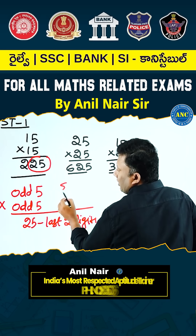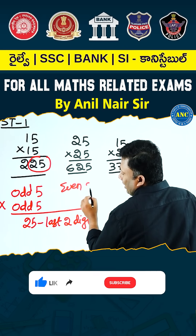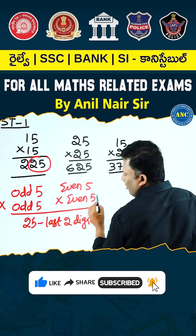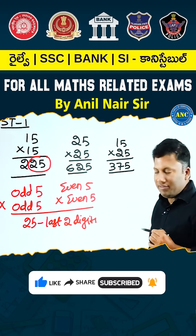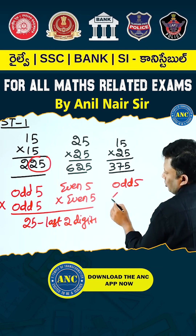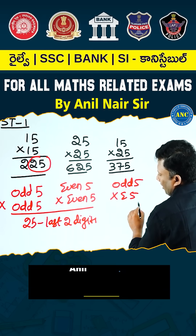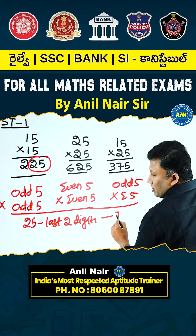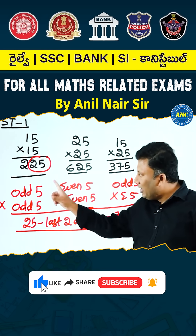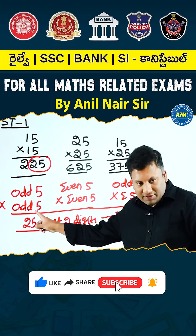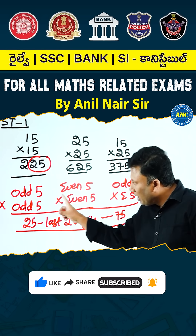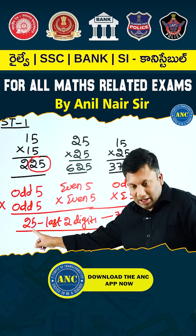2 is an even number — even number ending with 5 into again 2, an even number ending with 5. What are the last two digits? 25. Here, 1 is an odd number ending with 5 into 2, an even number ending with 5. What are the last two digits? 75. The concept is: whenever any two odd numbers ending with 5 or any two even numbers ending with 5 are multiplied, the last two digits will be 25.